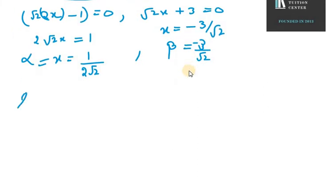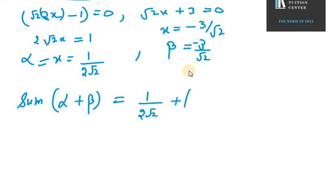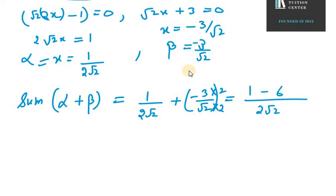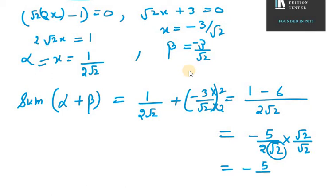For verification, we will take the sum of roots, that is alpha plus beta. Alpha is 1 over 2 under root 2, plus beta which is minus 3 over under root 2. Taking LCM, we get 2 under root 2, and we multiply the second term to get minus 1 minus 6, which gives minus 5 over 2 under root 2. To rationalize, we multiply by under root 2 over under root 2, giving minus 5 under root 2 over 4.